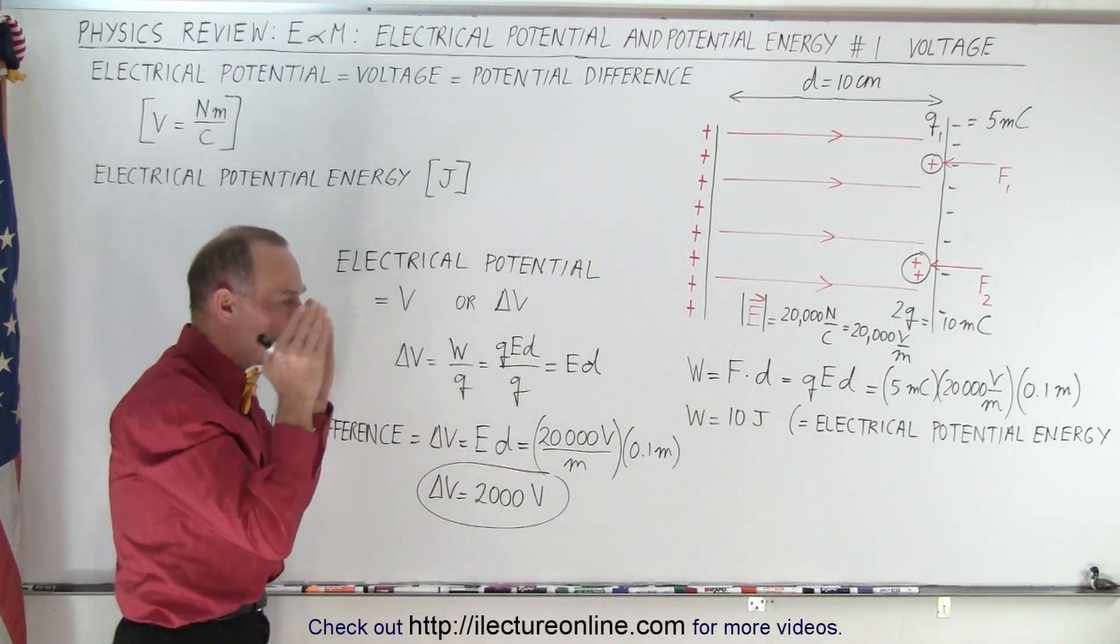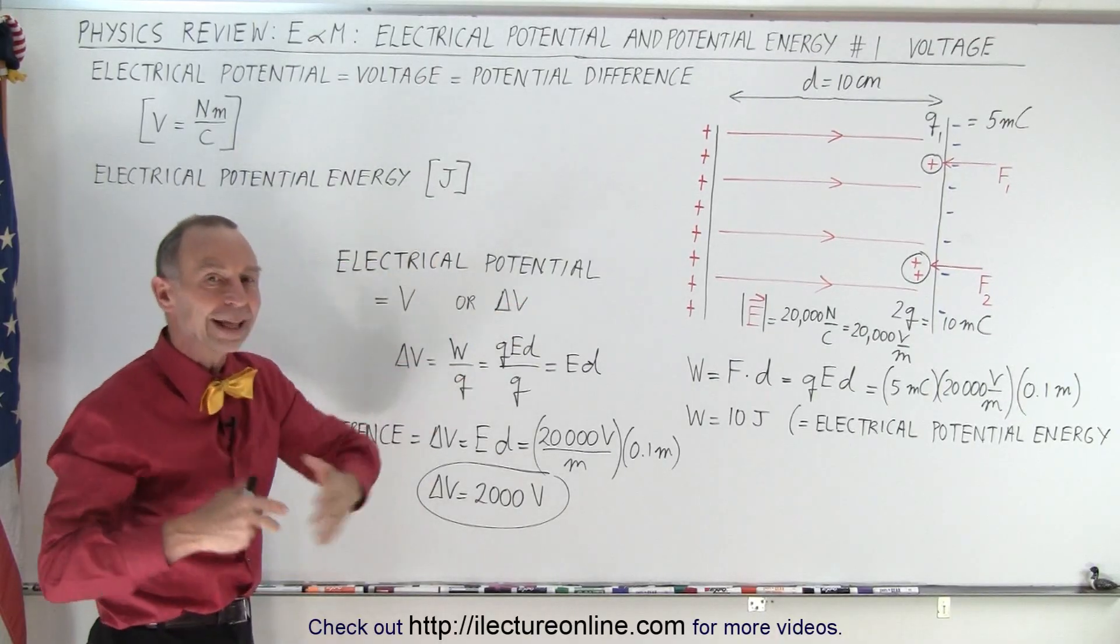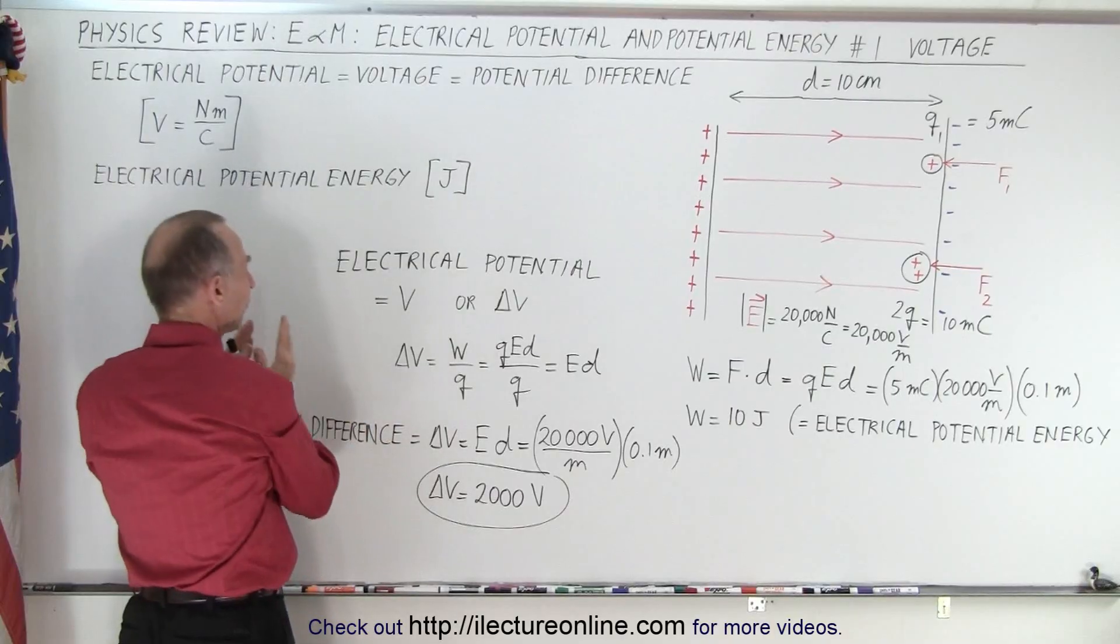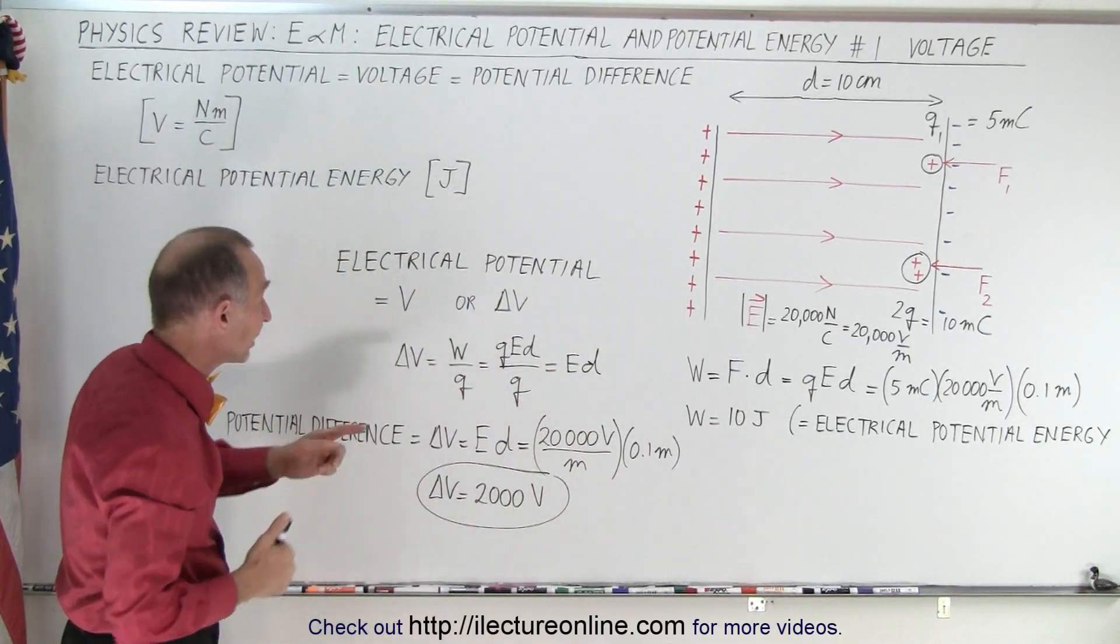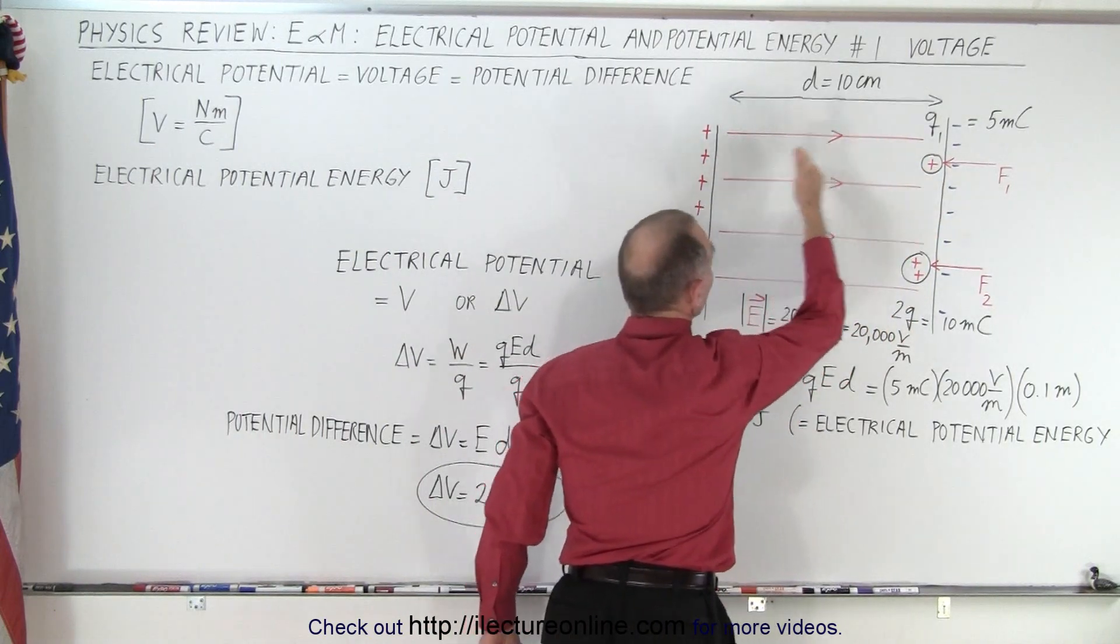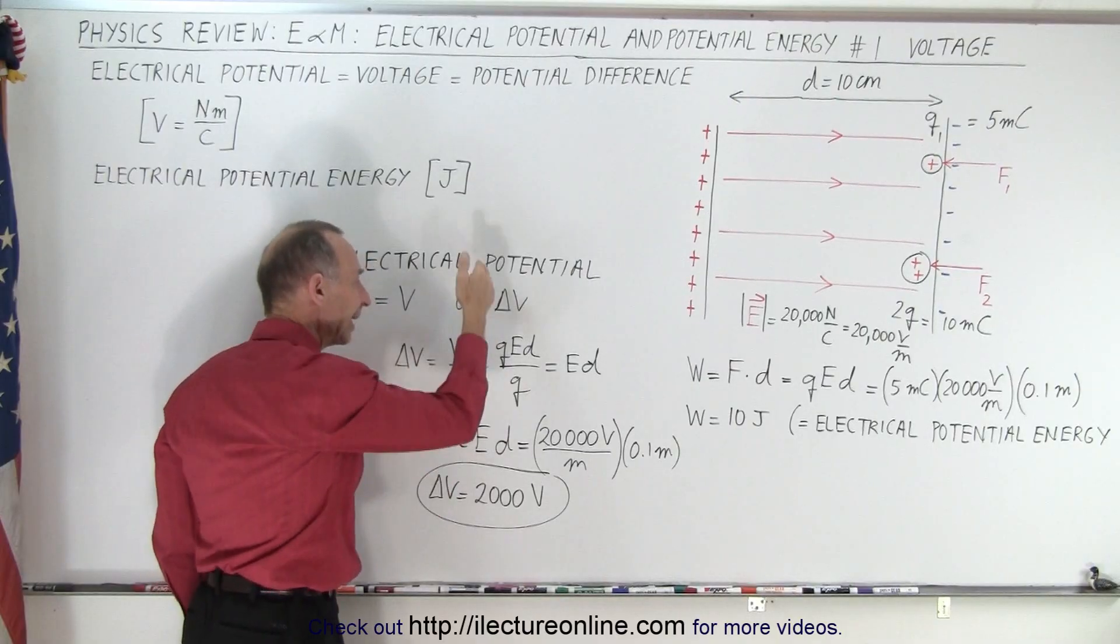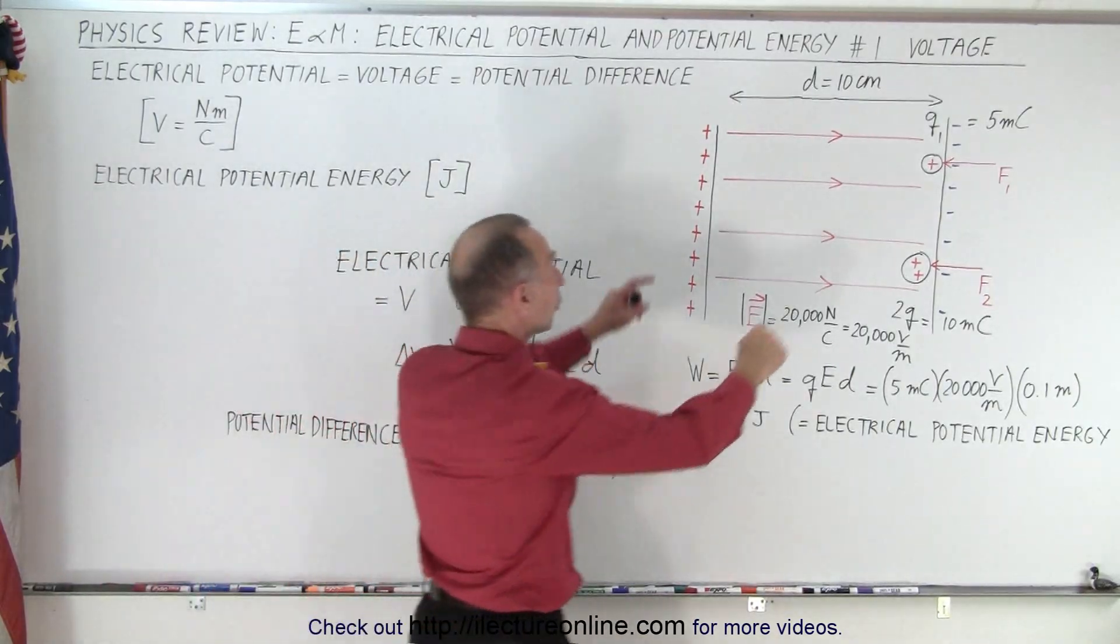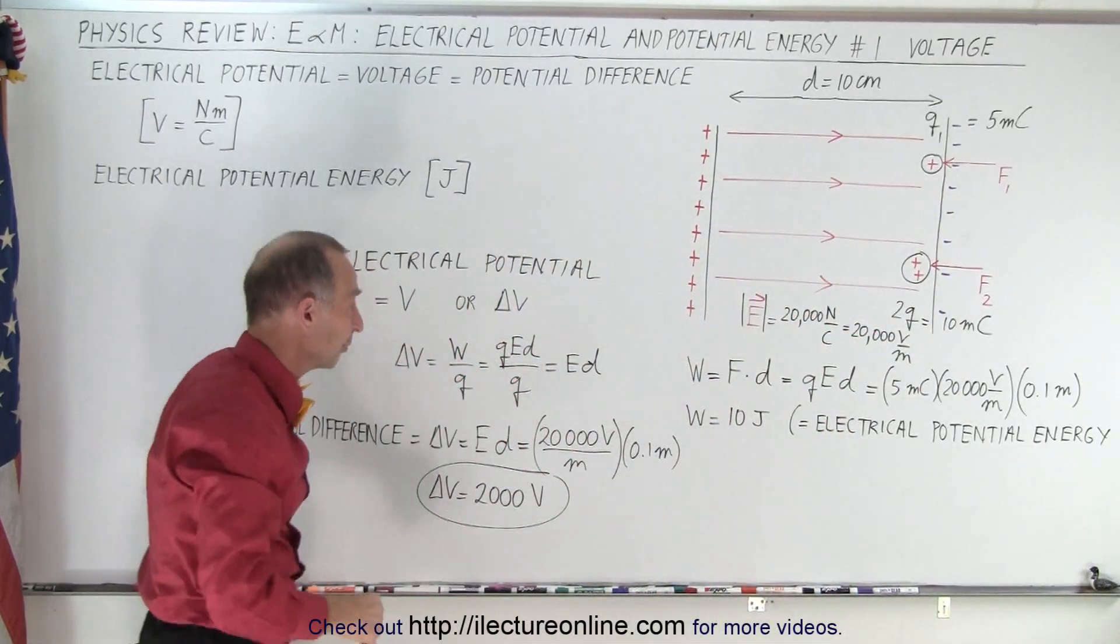But we want to be able to quantify a difference in potential from one point to another point, and that's essentially what we call it. That's why we call it a potential difference, the difference in the voltage from one point to another point. And how do we define that? Well, we define that by the amount of work we have to do to move the charge from one point to another charge. And if we divide that work done by the charge itself, that ratio becomes what we call the potential difference, the voltage difference between these two points.